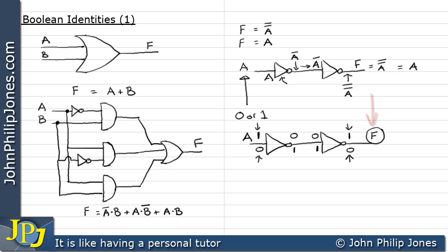Because when A was a one, the output was a one. And when A was a zero, the output was a zero. So we can legitimately say that F is therefore equal to A.